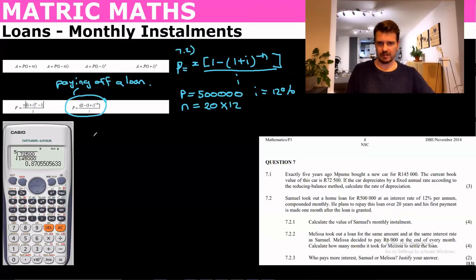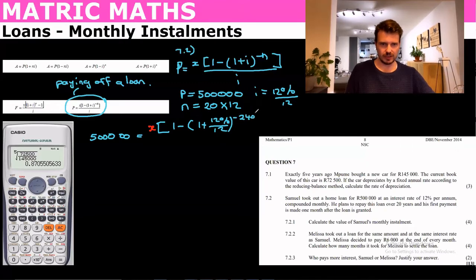And so we've got 500,000 equals x is what we want to figure out. So we're going to say x times [1 minus (1 plus 12% over 12) to the minus 240] all over 12% over 12, which is basically just 1%. So I'm going to change the 12% when I put in my calculator to 1.